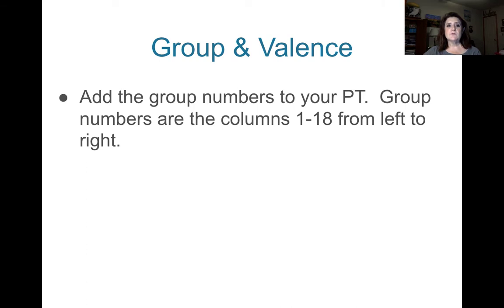First thing, on your periodic table, you're going to want to add the group numbers and the valence. So the group numbers, add the group numbers to your periodic table. This is literally numbering the columns 1 through 18 across the top from left to right. Do that now.